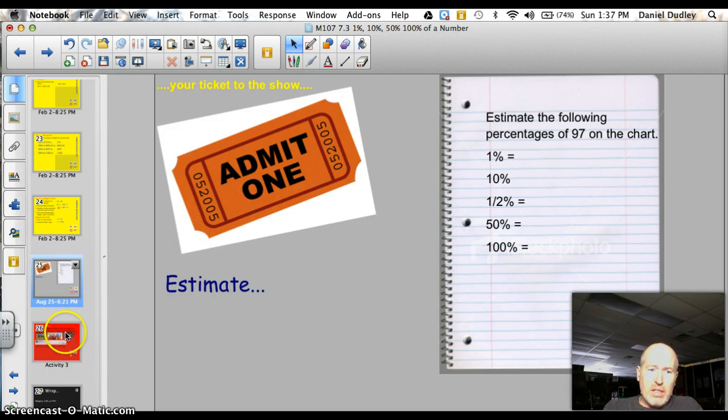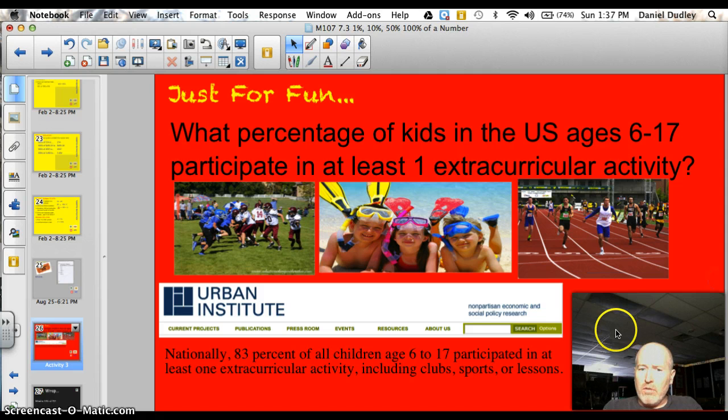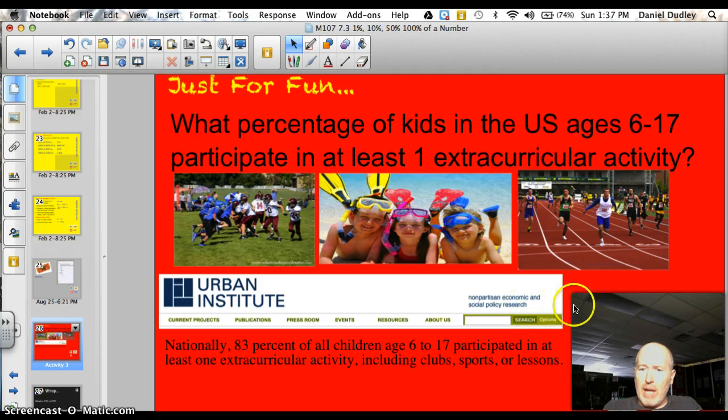Here is the percentage question of the day. What percentage of U.S. kids, ages 6 through 17, participate in at least one extracurricular activity? I was shocked. From the Urban Institute, which is kind of a non-partisan economic and social policy research institute. They found out that 83% of all kids, age 6 to 17, participate in at least one extracurricular activity, clubs, sports, or lessons. So, I think that's awesome. I think I'd like to see that number even higher. All right, thanks so much. Bye.